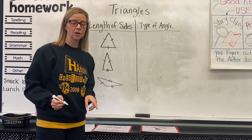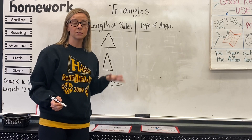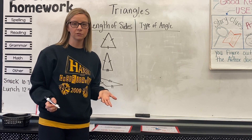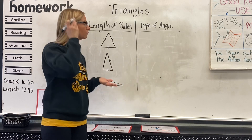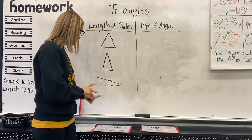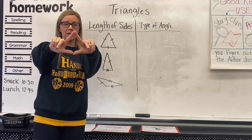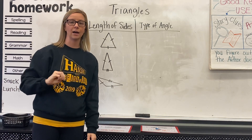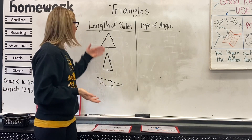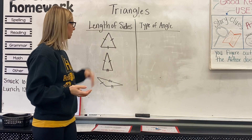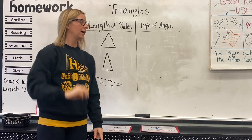That's a scalene triangle. So if you watched the triangle song that goes along with these lessons, we say an equilateral triangle has three congruent sides — and congruent just means the same, same length. So equilateral triangle: three congruent sides.